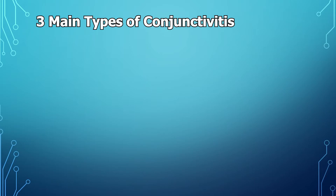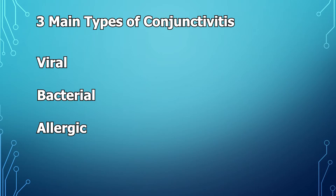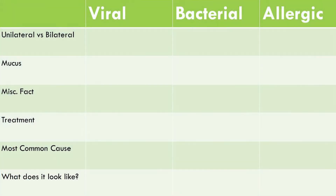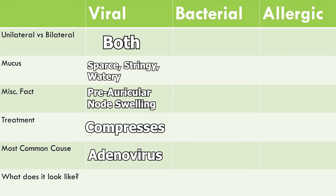There are three main types of conjunctivitis you need to know for Step 1: viral, bacterial, and allergic. They all look pretty similar, but there are a few key differences to look for in question stems to help you differentiate them. For viral, it's likely going to be unilateral but can progress to bilateral. It'll have sparse, stringy mucus discharge and swollen preauricular nodes, found right in front of the auricle — your ear. Generally it's self-resolving, so you treat it with warm or cold compresses.